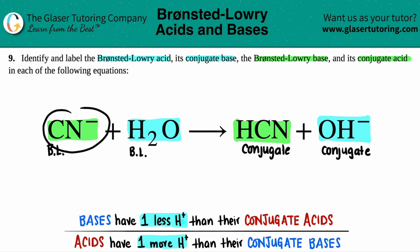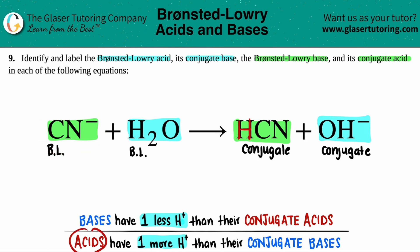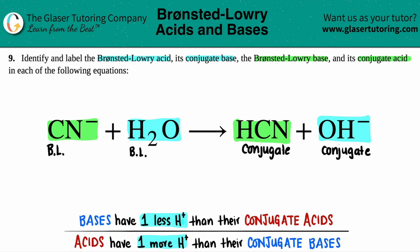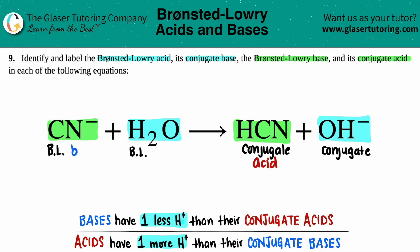So between CN⁻ and HCN, who has the hydrogen? HCN has one more hydrogen than CN⁻, and acids always have one more hydrogen. So HCN has to be the conjugate acid. And if that's the acid of the pair, CN⁻ has to be the base — so CN⁻ is the Bronsted-Lowry base.